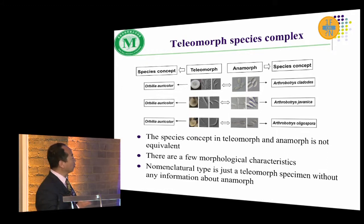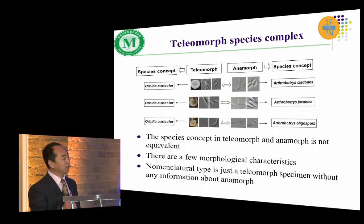The normal nomenclatural types are telemorphic species without any information about anamorphics. One of my colleagues complained that we don't have a systematics for the anamorphic fungi. But I think anamorphic and telemorphic forms are just different stages of the life cycle — they should also have a systematics.